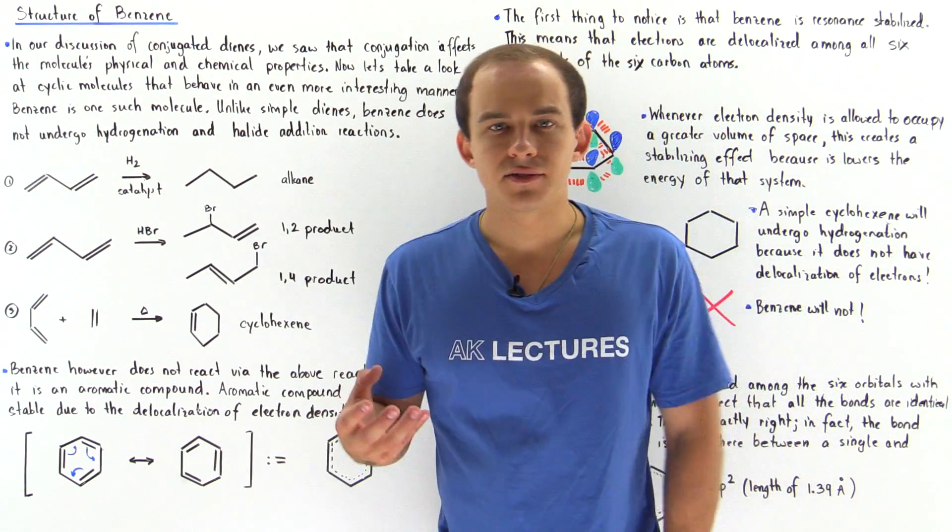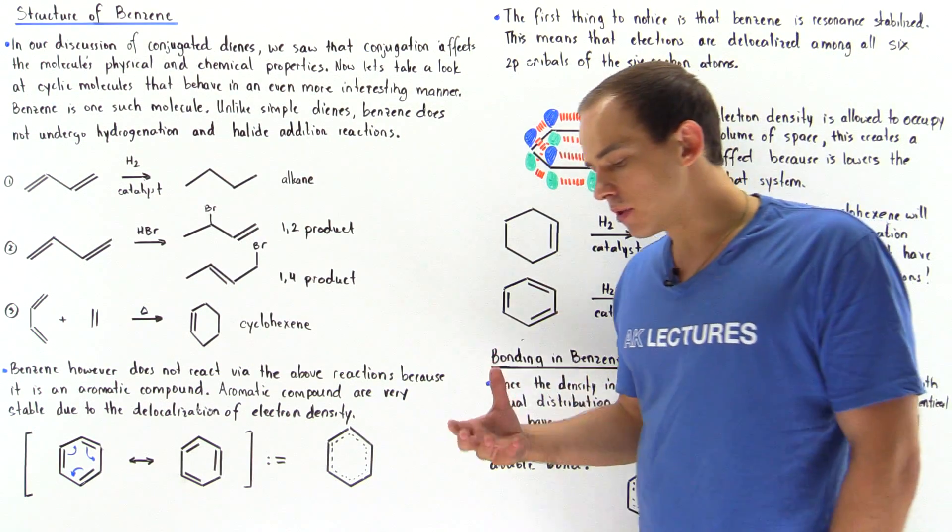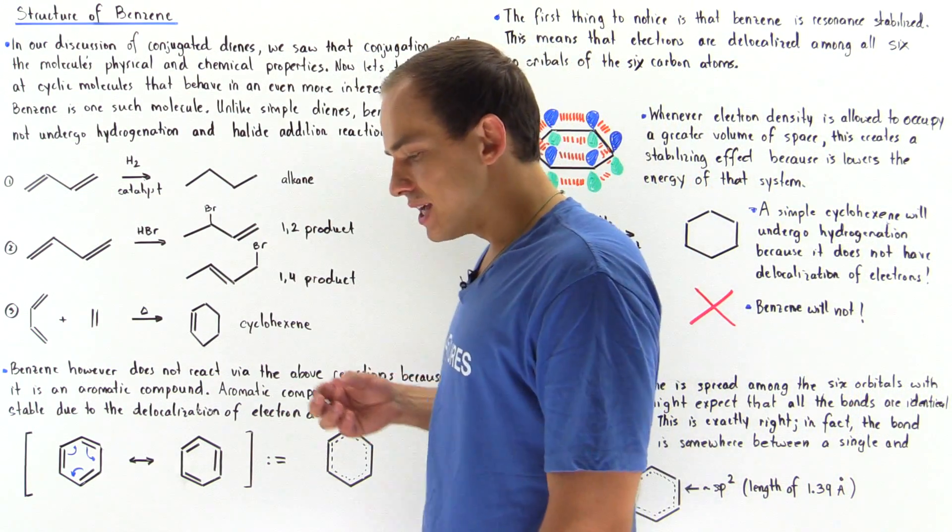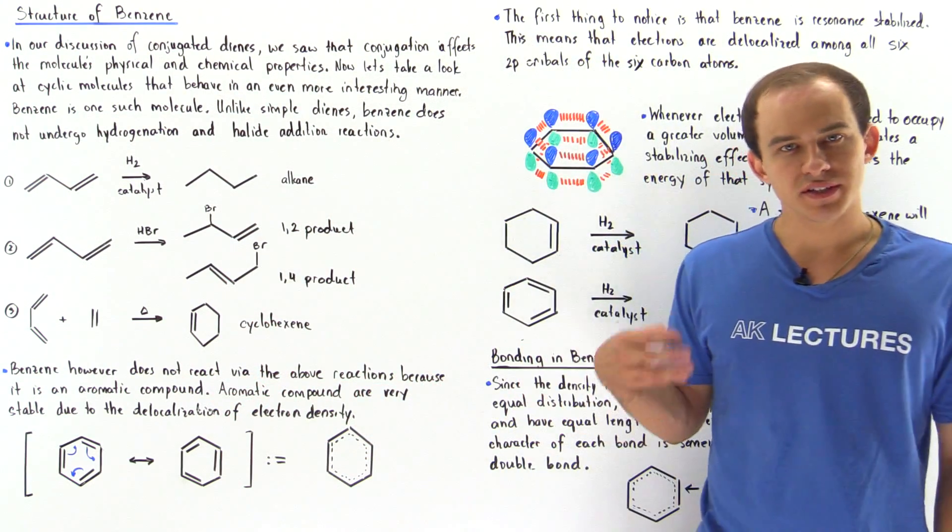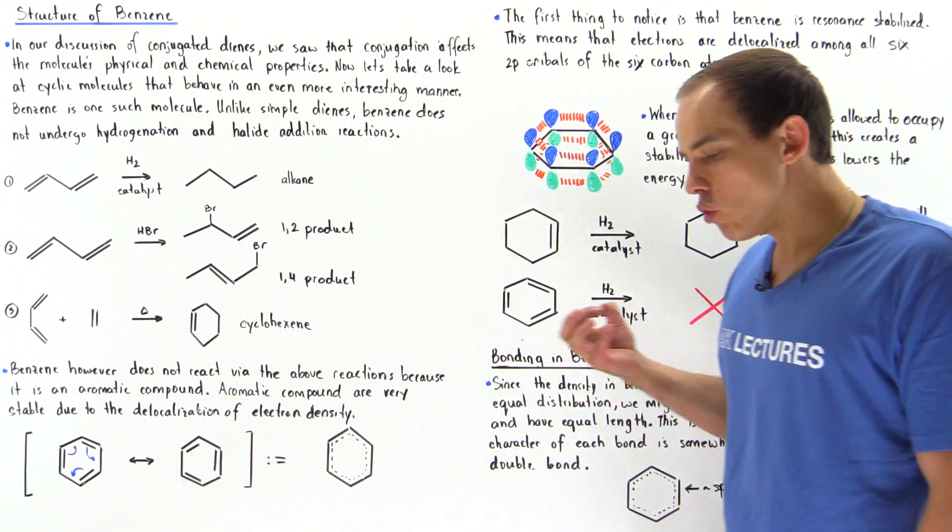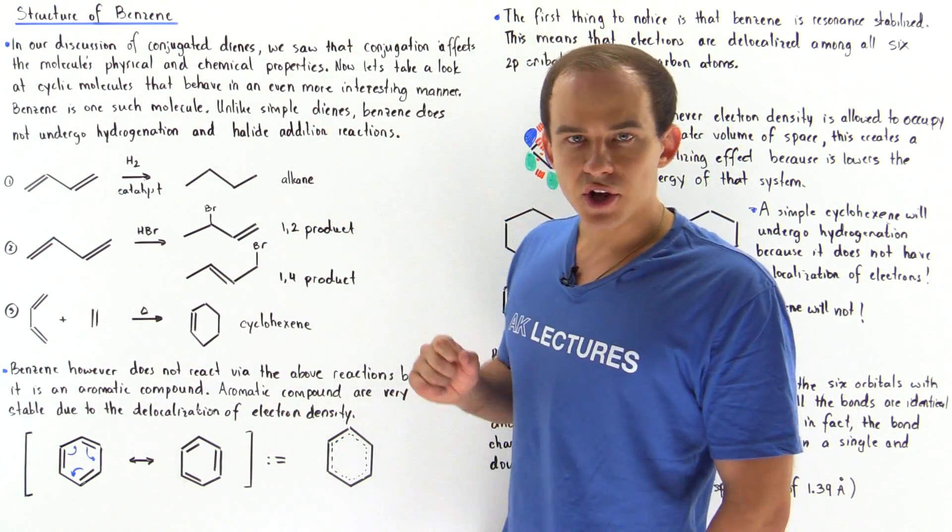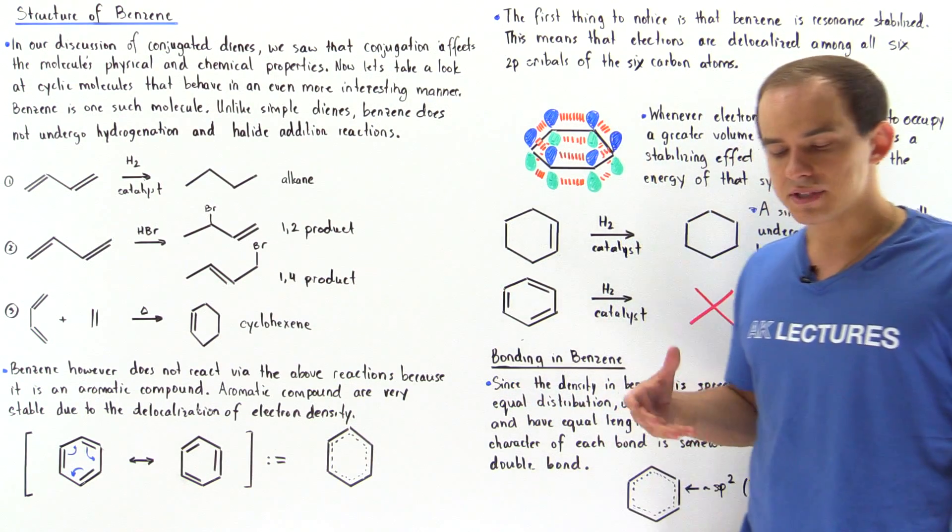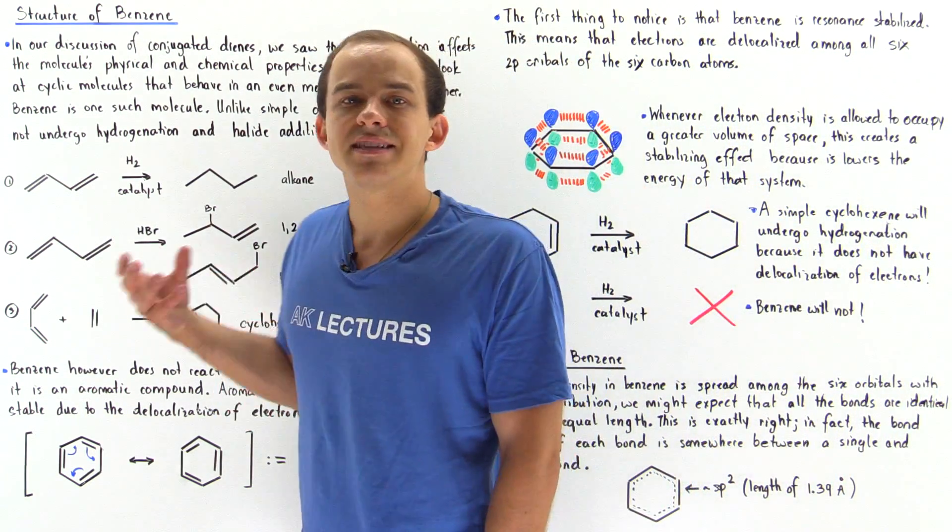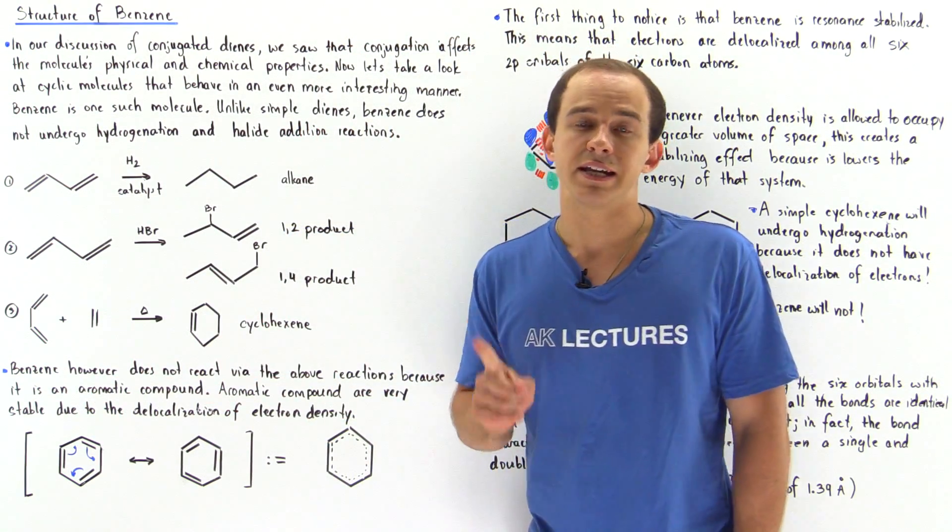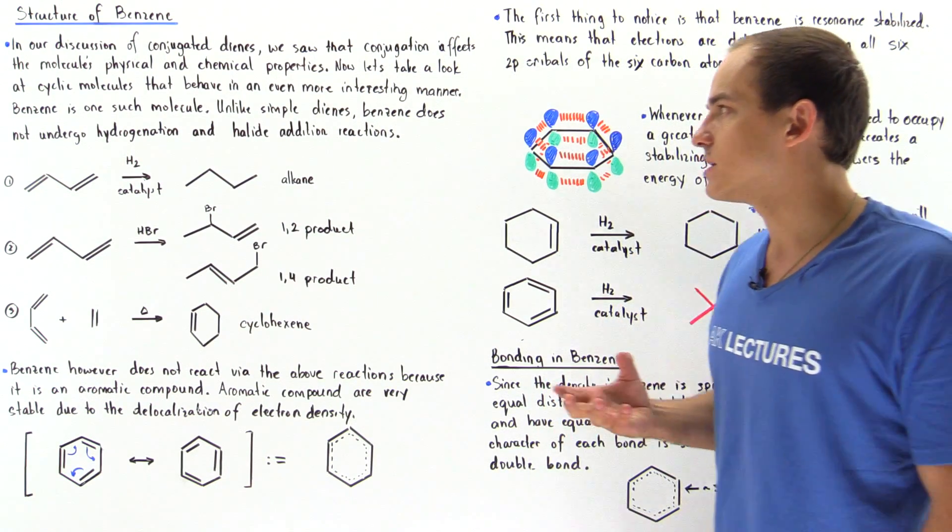Regular alkenes and dienes react in very similar ways and they also have relatively similar physical properties. Now we discussed the concept of conjugation of dienes. So we said conjugation is basically the overlap of atomic or molecular orbitals between the second and third carbon atoms inside 1,3-dienes. And so we said that conjugation is a stabilizing effect and it influences, it affects the physical and chemical properties of our molecules.